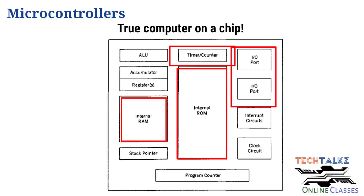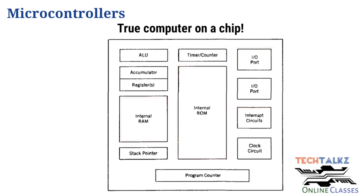For the microprocessor, the main components include: ALU, accumulator, other working registers, stack pointer, program counter, clock circuits, and interrupt circuits.